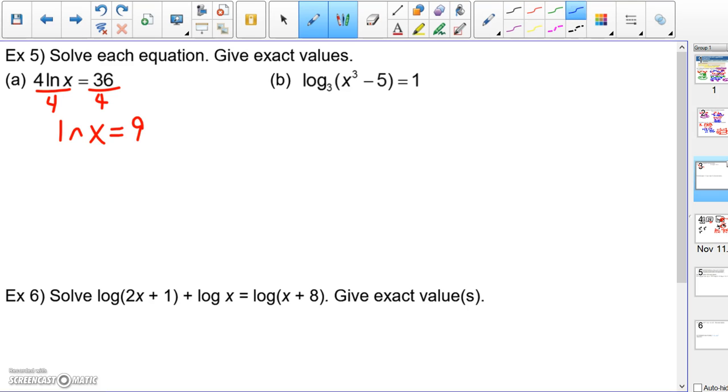And in order to get out of a log, you're going to do an exponential. The inverse operation of a log is an exponential. So since this is a log base e, we're going to do an exponential base e on both sides to cancel out. Now x is equal to whatever e to the ninth power is. If it didn't say give exact values, I'd get my calculator out. But since I want exact values, I'll just leave it right like that.